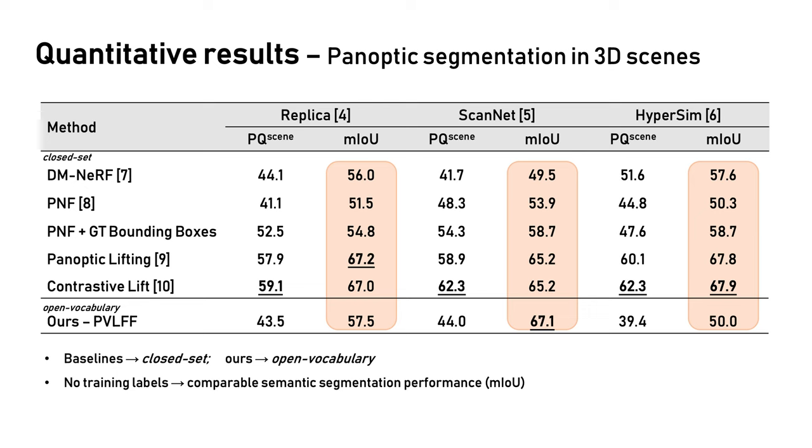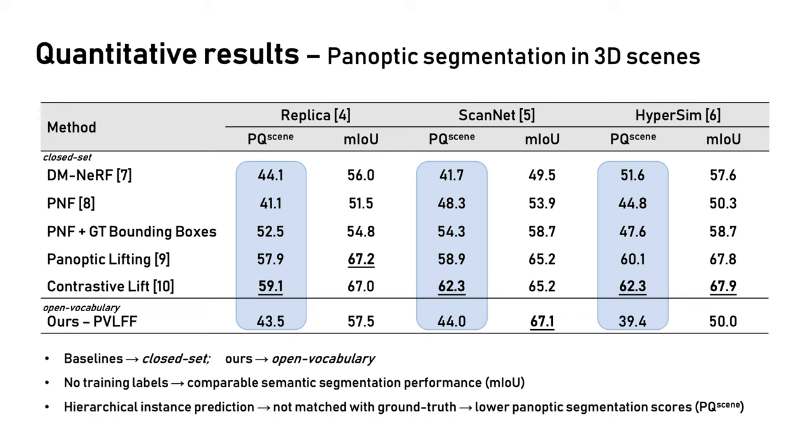As for panoptic segmentation, our scores are slightly lower. We observe that this is largely due to the fact that, unlike these closed-set systems which are trained on the specific classes evaluated, PVLFF does not rely on any semantic or instance labels during training.